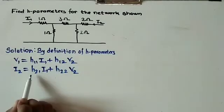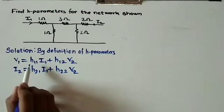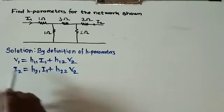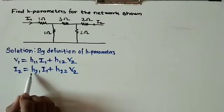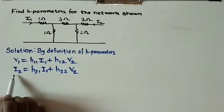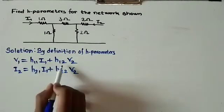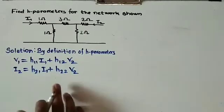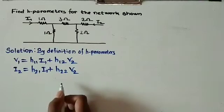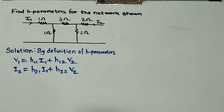Here h11, h12, h21, and h22 are our h-parameters. To find them: h11 equals v1 over i1 when v2 equals 0, h21 equals i2 over i1 when v2 equals 0. Similarly, when i1 equals 0, we can find h12 and h22.